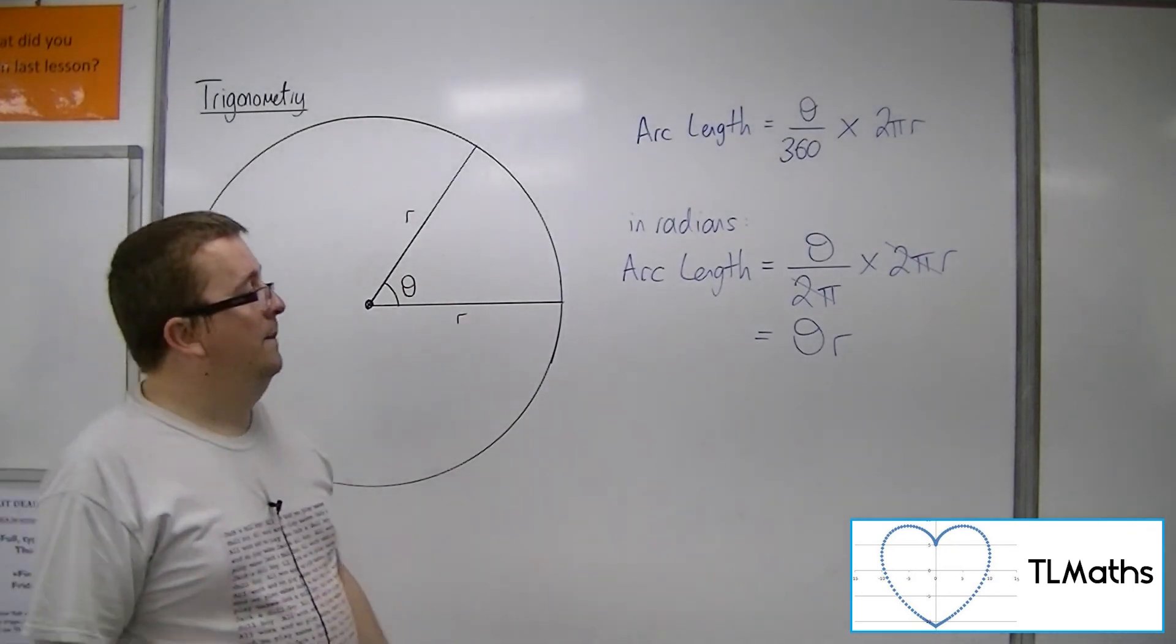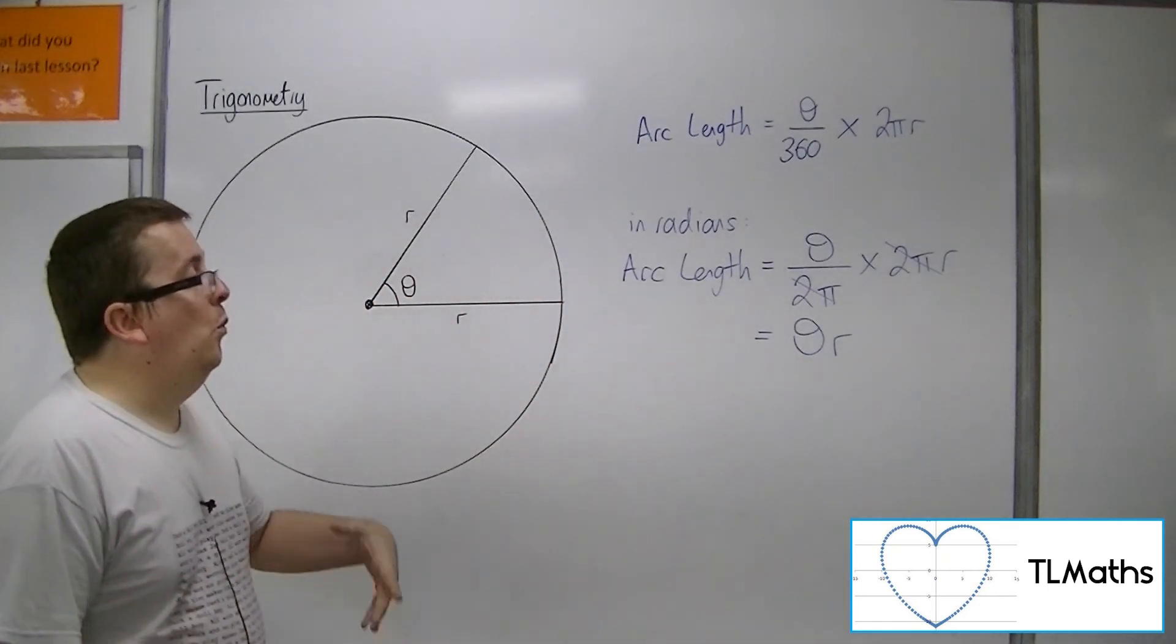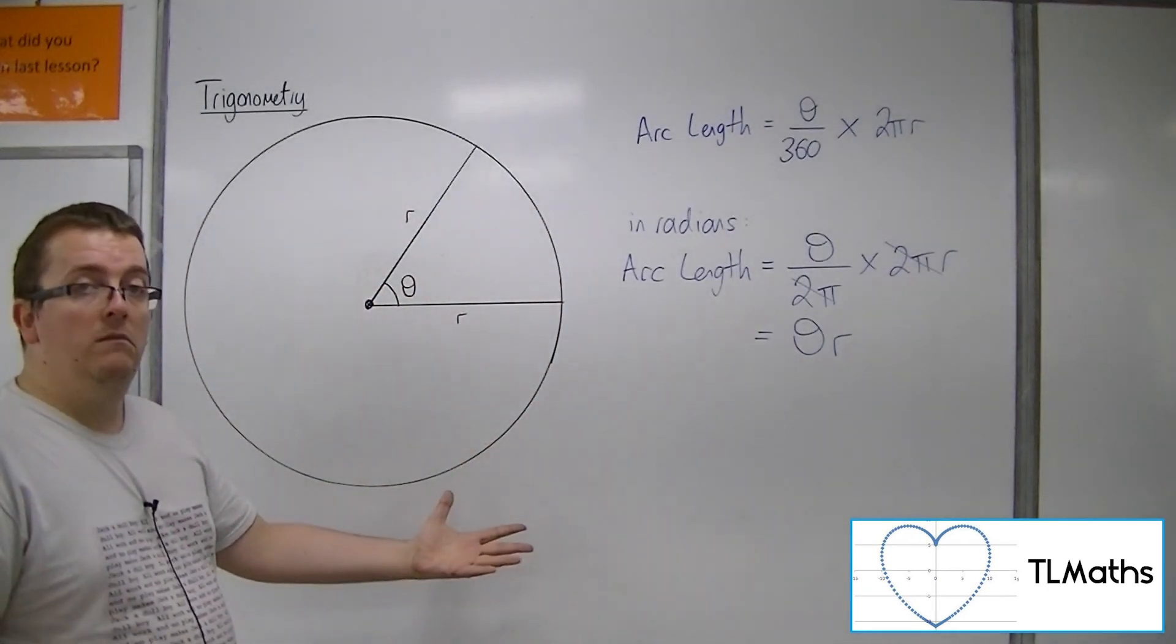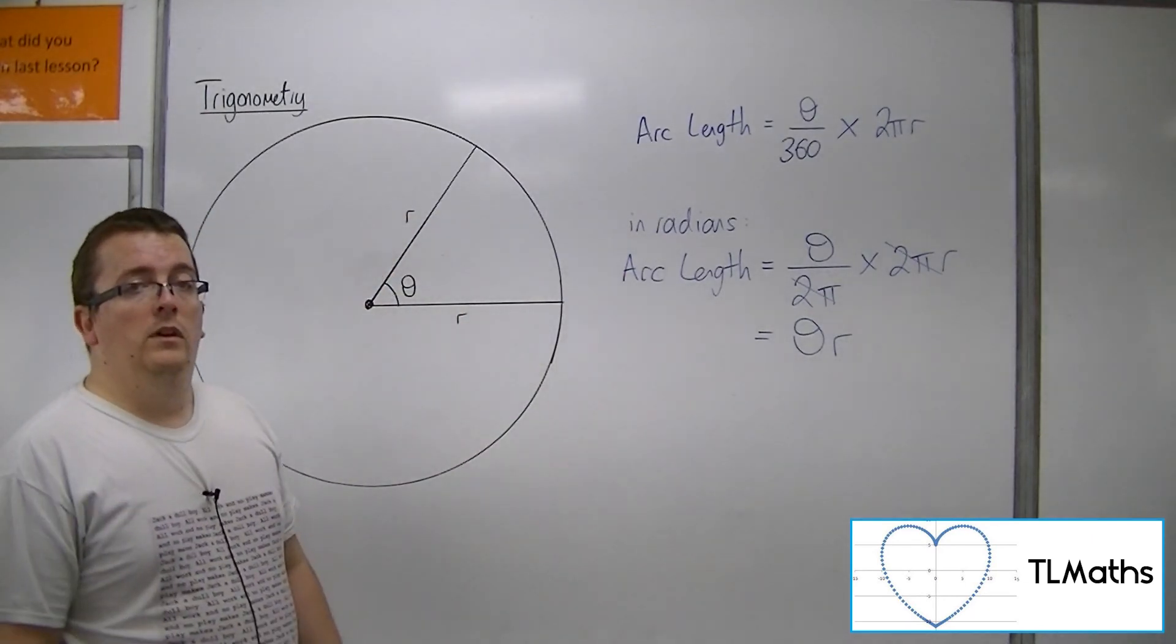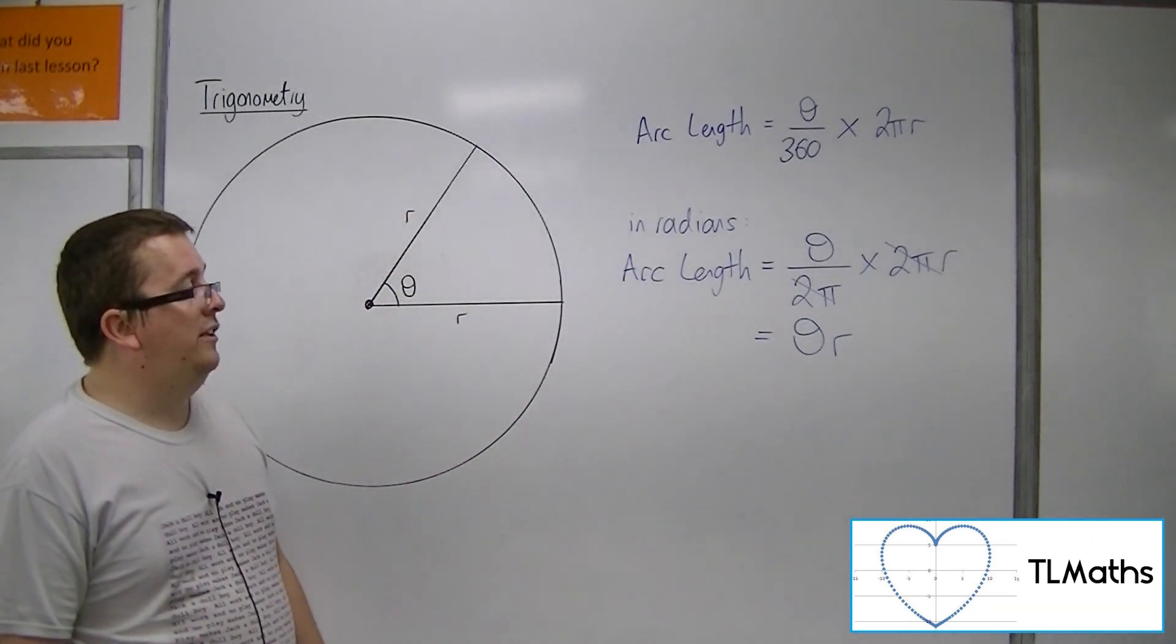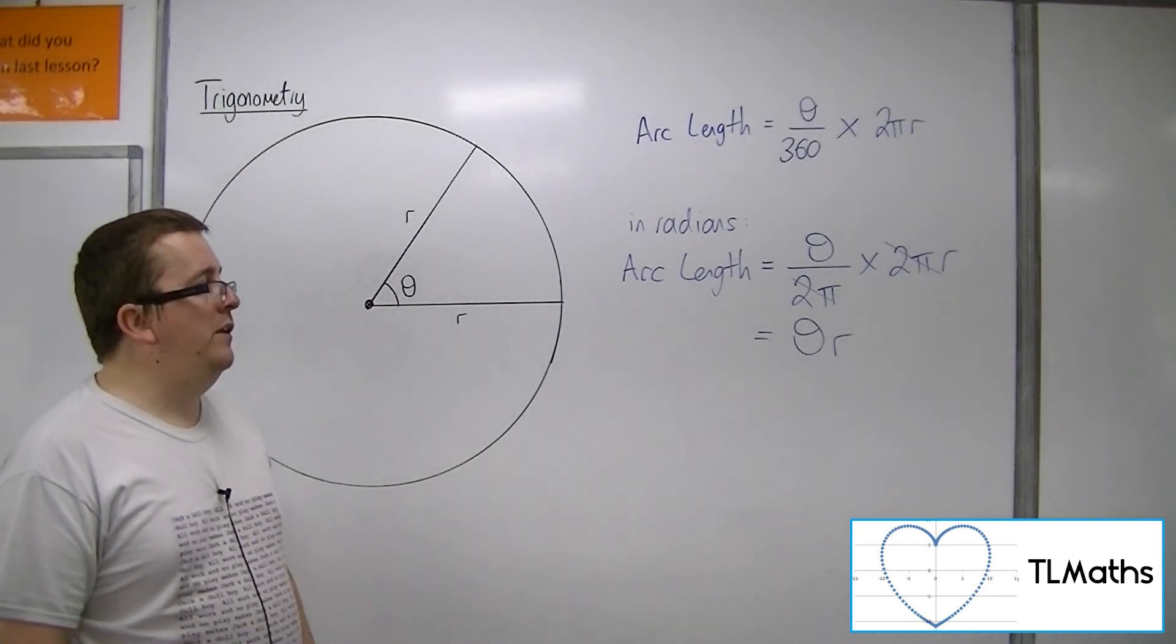So if you know that theta is 1, 1 radian, and r is 5 centimeters, then the arc length is 1 times 5, so 5 centimeters. And that is the formula that you can utilize.